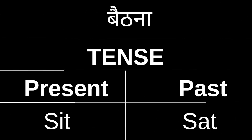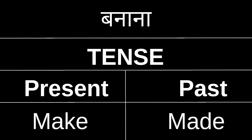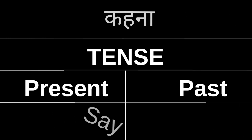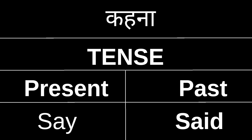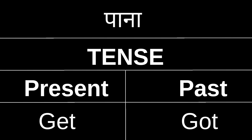Pukarna — present tense: call, past tense: called. Ikhta karna — present: collect, past tense: collected. Baitna — present tense: sit, past: sat. Banana — present tense: make, past tense: made. Kahana — present: say, past tense: said. Pana — present: get, past tense: got.